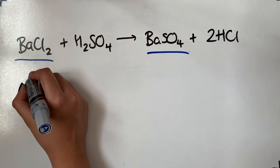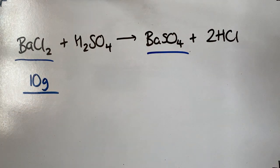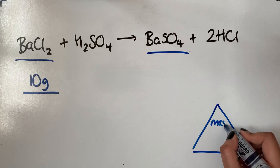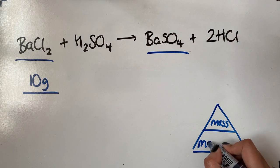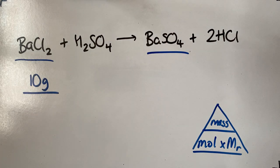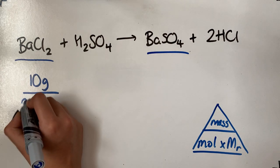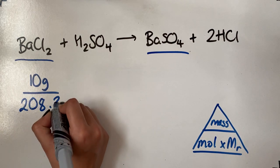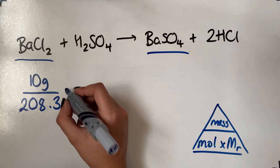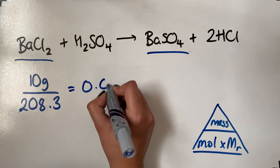So barium chloride — you've got 10 grams of it. You're going to divide that by the molar mass. Just to show you which equation I'm using, it is mass over moles times MR. Because we've been given the mass of it, we're going to use this equation here. So you do mass — 10 grams — divided by the molar mass of barium chloride, which I've worked out as 208.3. So you're now going to work out the moles by doing 10 divided by 208.3, which gives you 0.048.